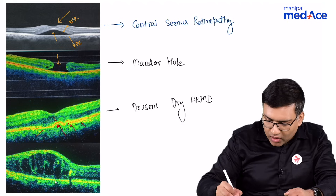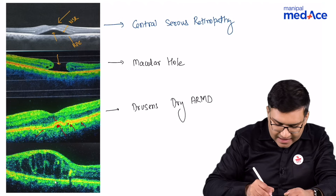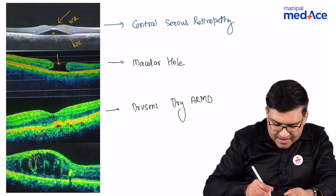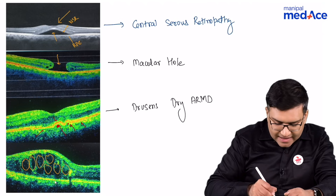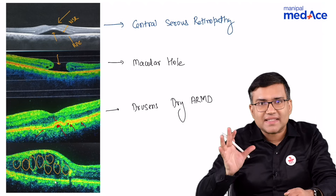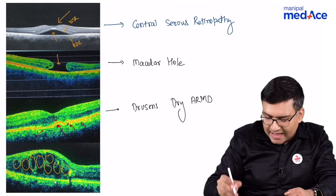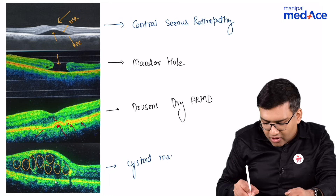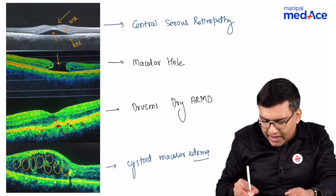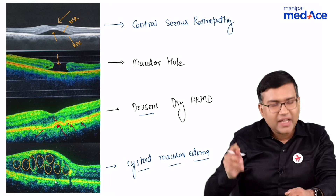See the last image. What you can see here is that there are cystic spaces in the inner retinal layers. Whenever we see cystic spaces in the inner retinal layer, that means we are dealing with cystoid macular edema. Remember these very important OCT pictures of the various macular disorders.